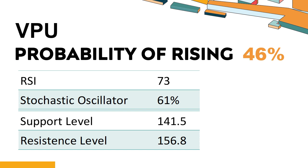How is VPU performed recently according to technical analysis? DPU's 14-Day Relative Strength Index (RSI) value was 73. When the RSI is between 50 and 70, it generally indicates that the stock is moderately bullish. The current stochastic oscillator of VPU is 61%. When the stochastic oscillator stays between 50 and 80, it may indicate a mild downtrend with some selling pressure, and an oversold signal could indicate a potential buying opportunity.